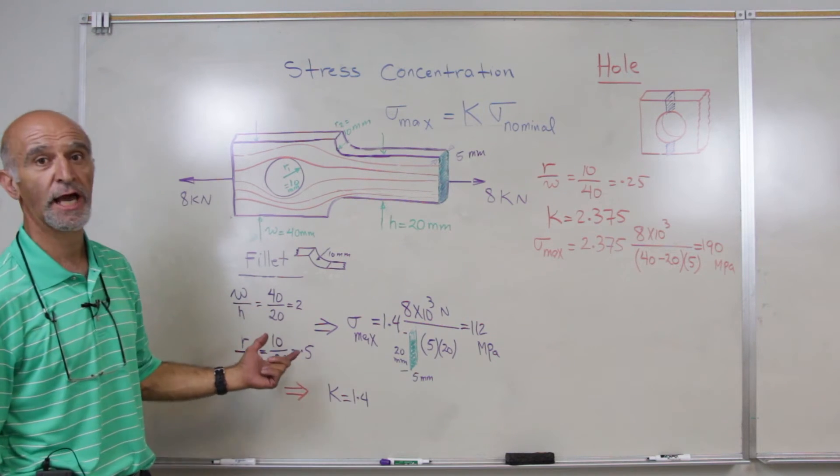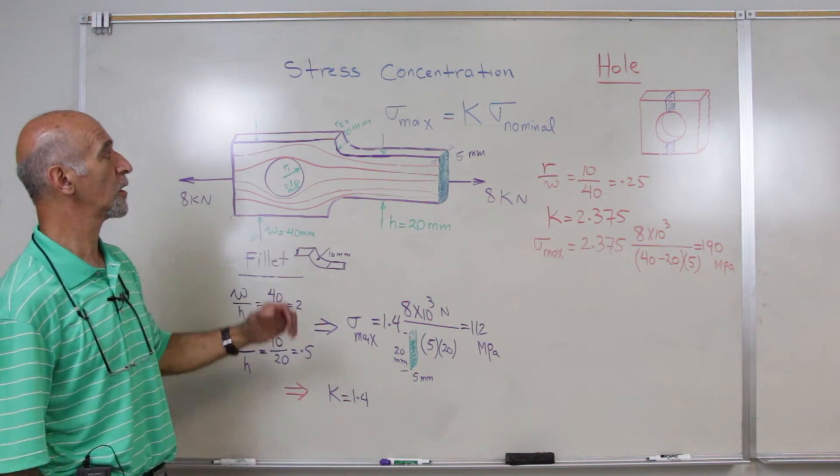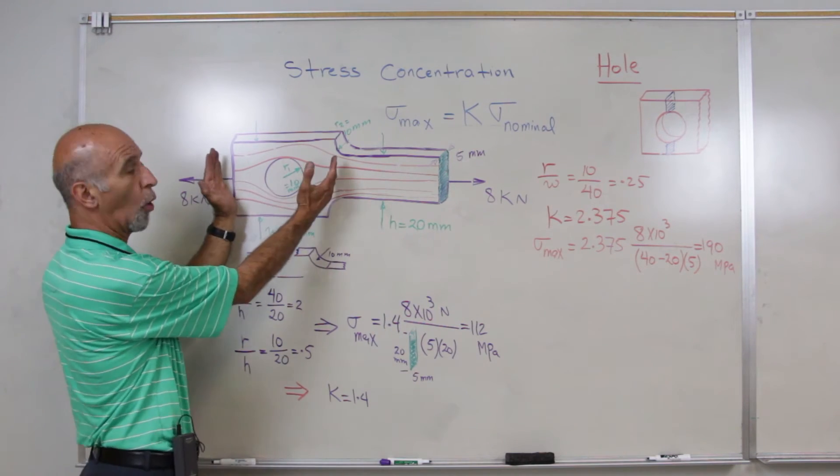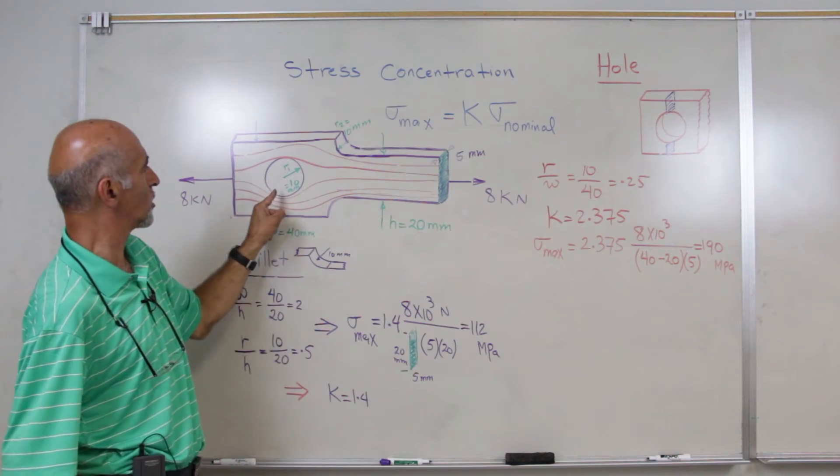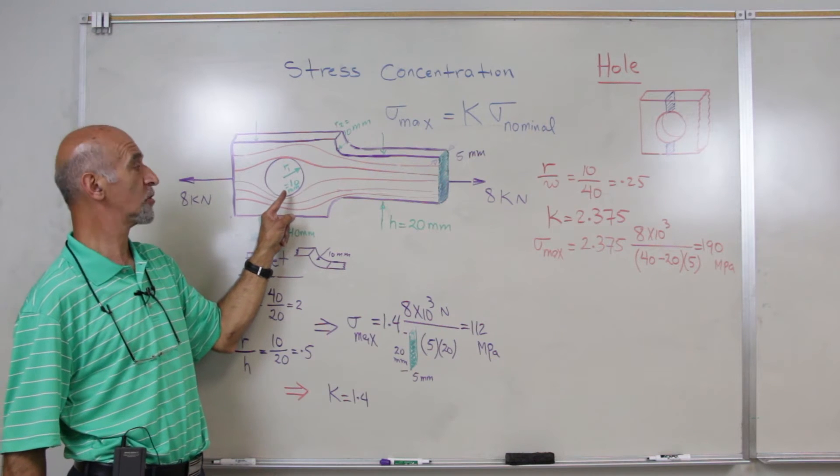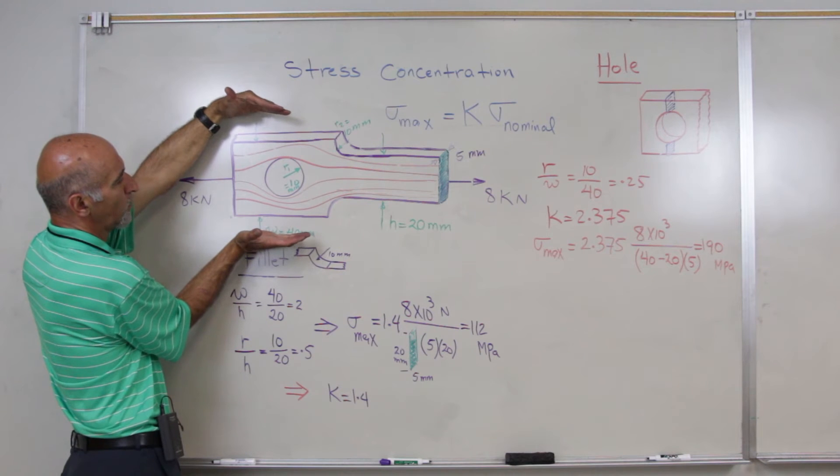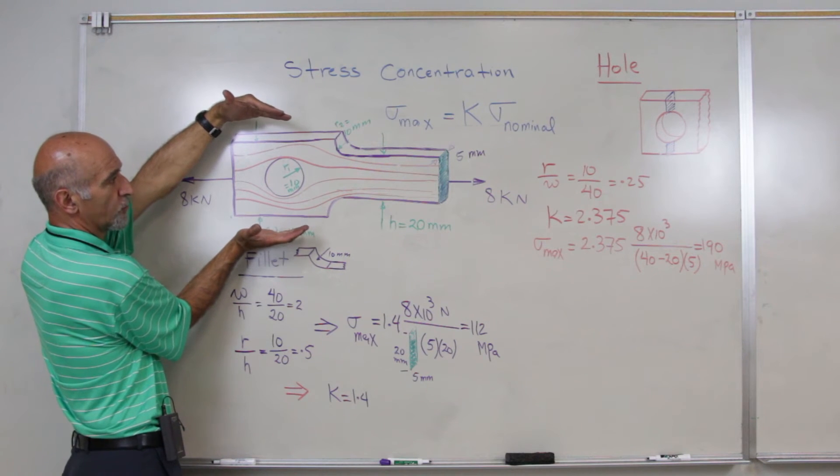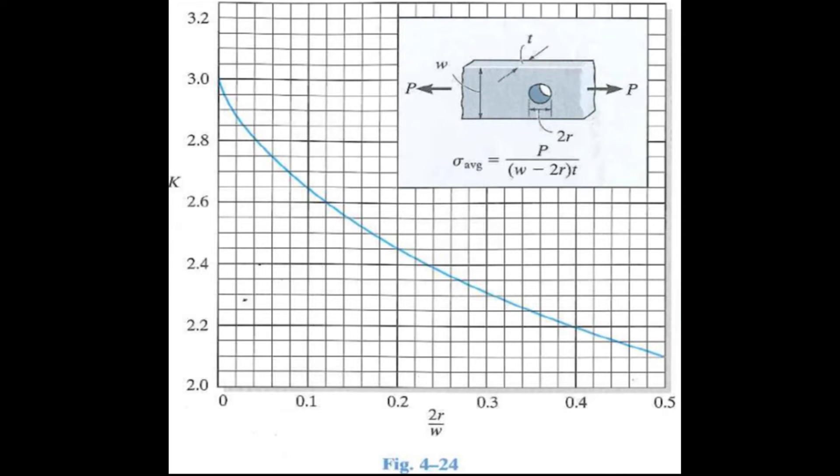Then we would have to calculate another stress concentration where exists in this bar, and that's due to the hole. The hole, as you see, is 10 mm in radius, and it is cut through in a 40 mm width of the bar. And by looking at this figure, which shows the curve for hole stress concentration factor,